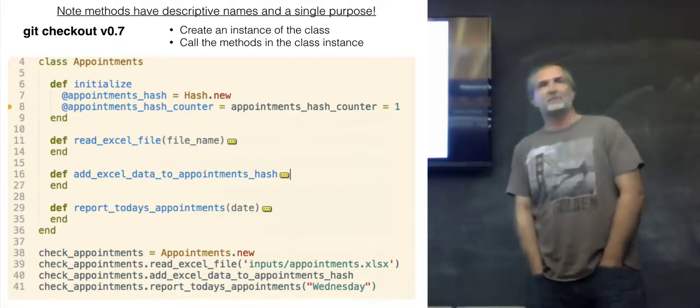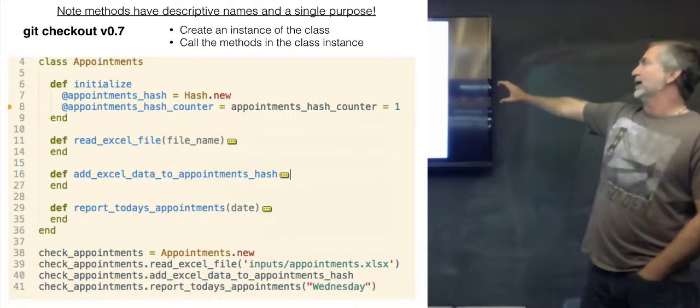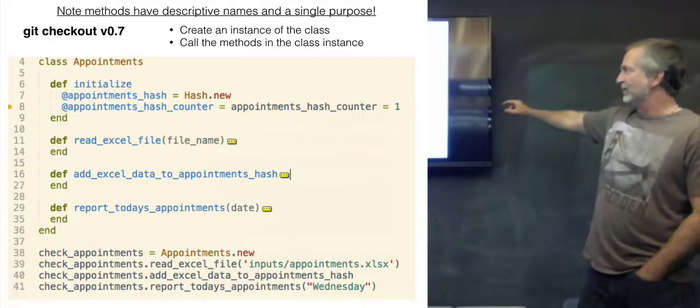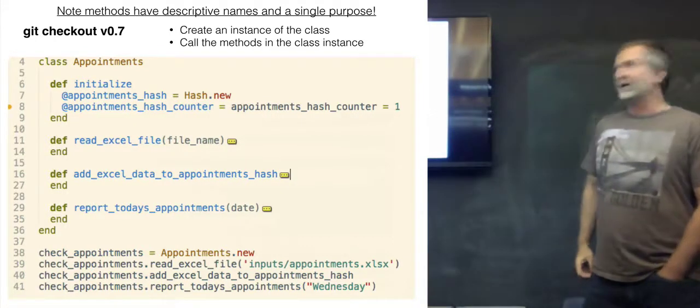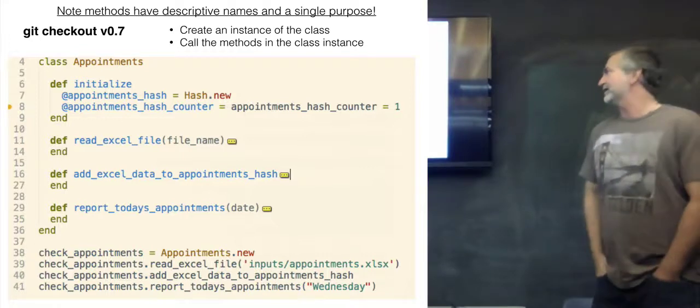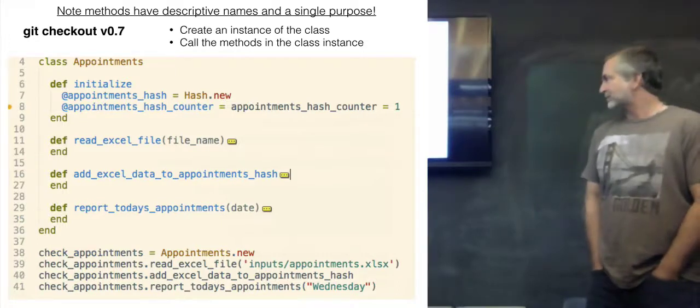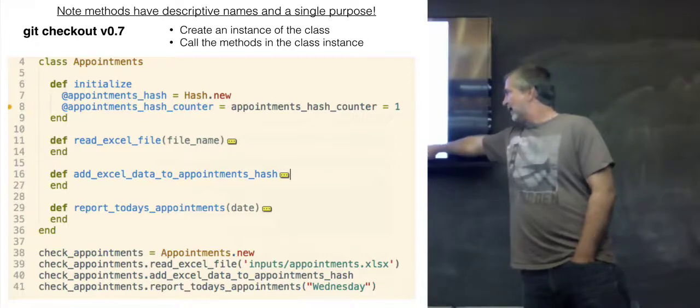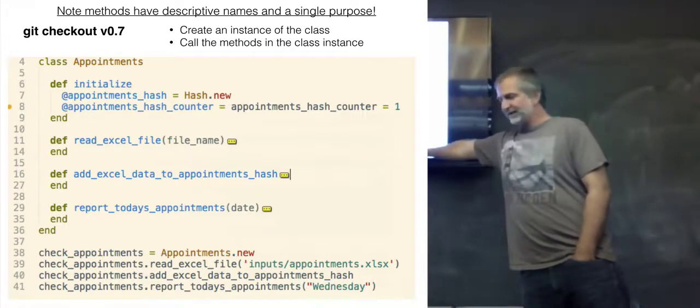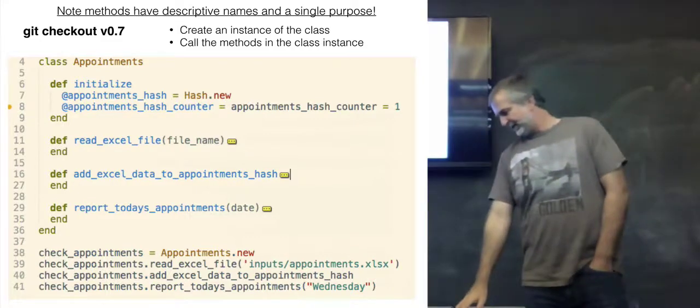One thing that actually you taught me is let's make these methods extremely descriptive, so each method does one thing and each method has an extremely descriptive name. So even if you were a novice programmer, not a programmer at all, you pretty much know what row 11 is going to do: it's going to read an Excel file. You know what line 16 is going to do: it's going to turn into a hash. And then lines 29 to 36 is going to output it. Then down here we're calling our object and we're passing the value of Wednesday, and that's how we do it.